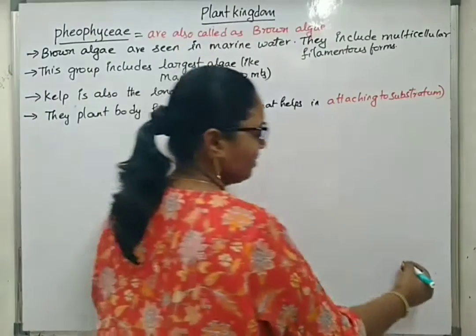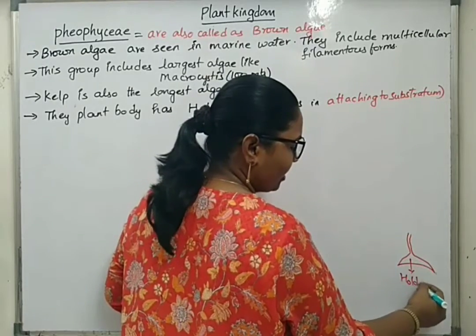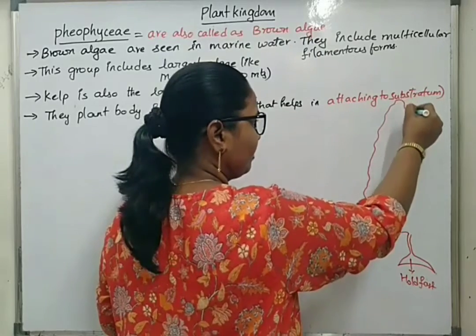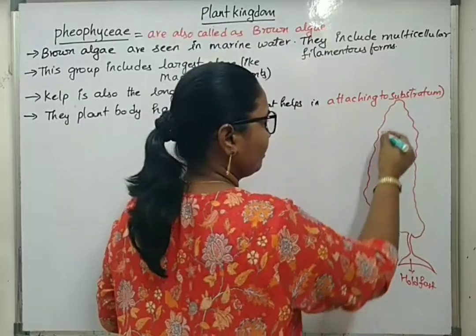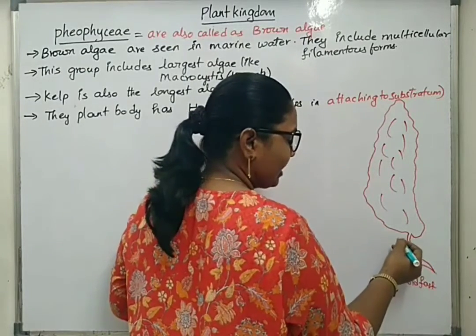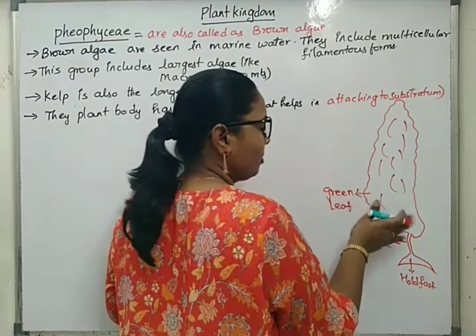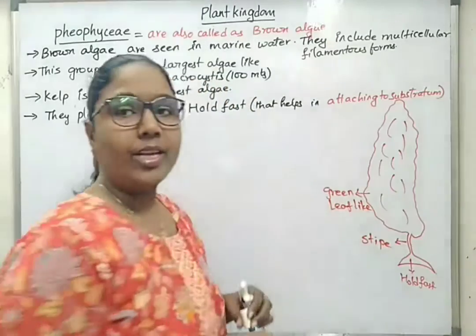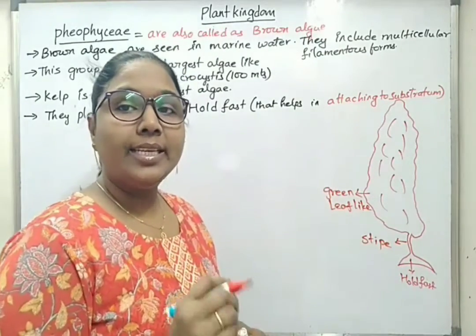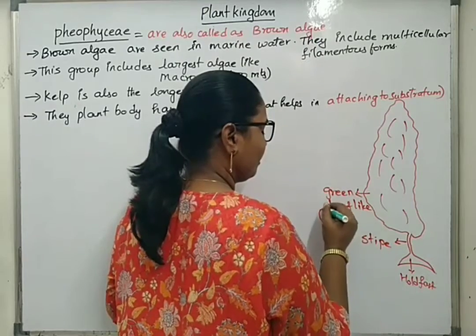The base part is the holdfast. The stem-like structure is called the stipe. The green leaf-like part — the total structure — is called as frond or lamina. Because of this, group members are also given the term Laminaria and are also called leafy stage algae.